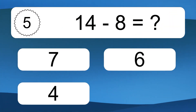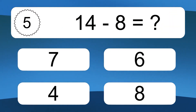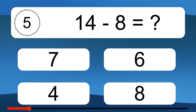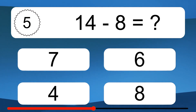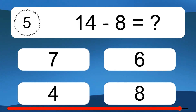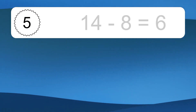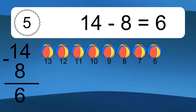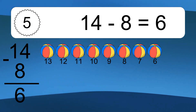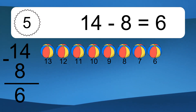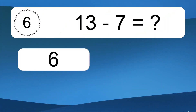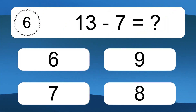14 minus 8 equals what? 14 minus 8 equals 6. Let's count it: 13, 12, 11, 10, 9, 8, 7, 6.